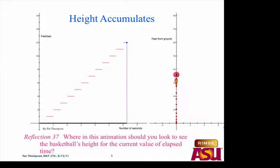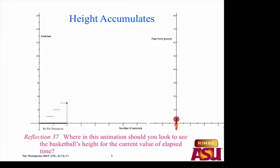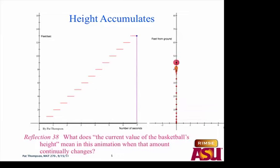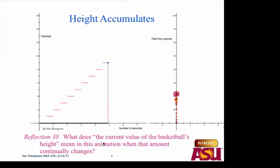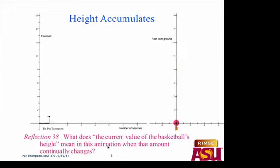Where should you look to see the basketball's height for the current value of elapsed time? The y-axis of the right graph — basically where the ball is at any given time. What does it mean, the current value of the basketball's height, when that amount constantly changes? The height is continuously changing — increasing every moment. Jessica says: like last time, if you paused it. Right, we'd have to pause life for a moment. If we pause it, that ball would be at some particular height — that would be the current value.